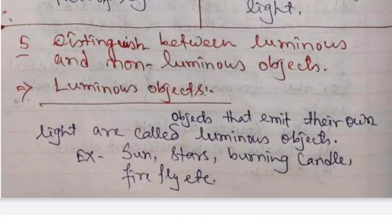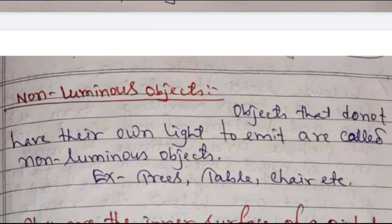Distinguish between luminous and non-luminous objects. Luminous objects are objects that emit their own light, e.g. sun, stars, burning candle, firefly, etc. Non-luminous objects are objects that do not emit their own light, e.g. trees, table, chair, etc.